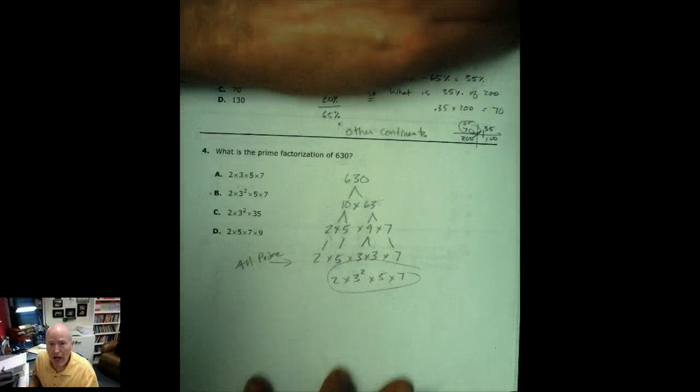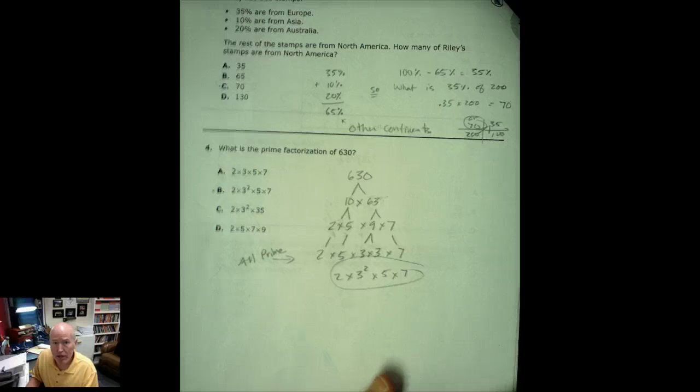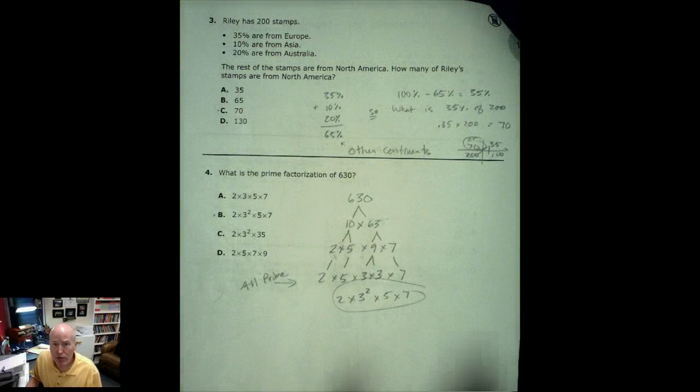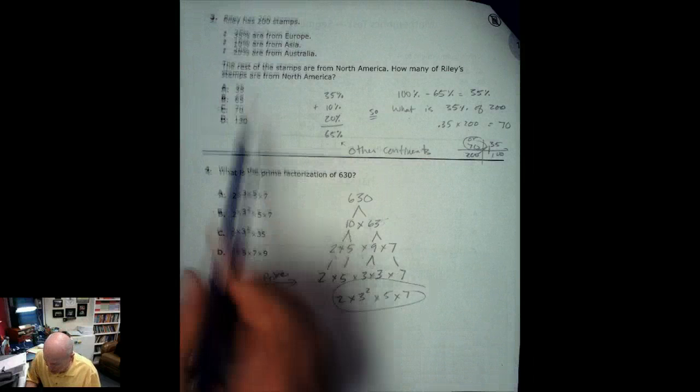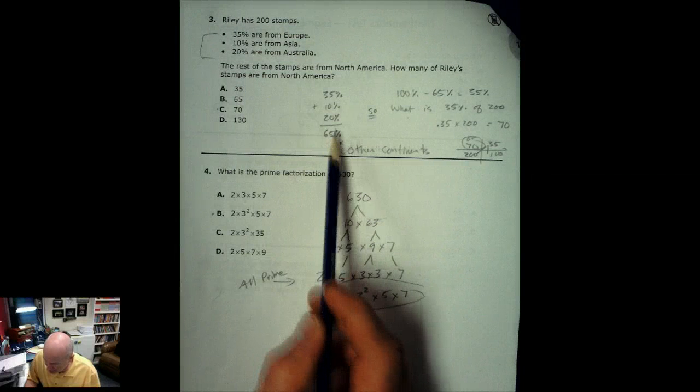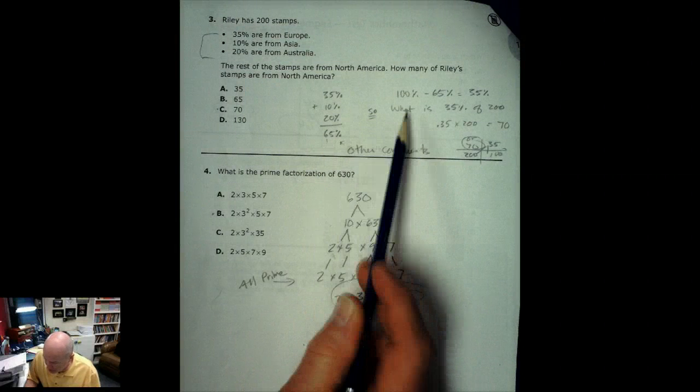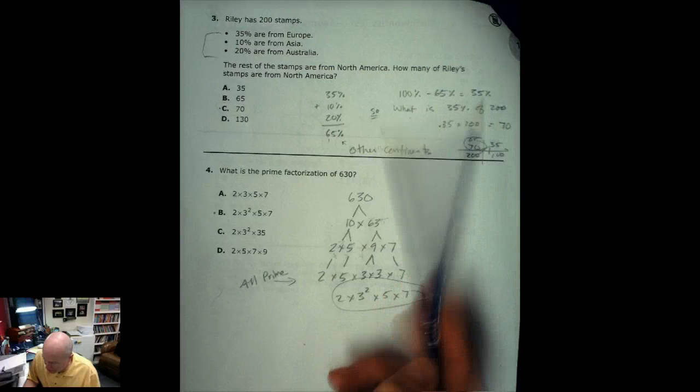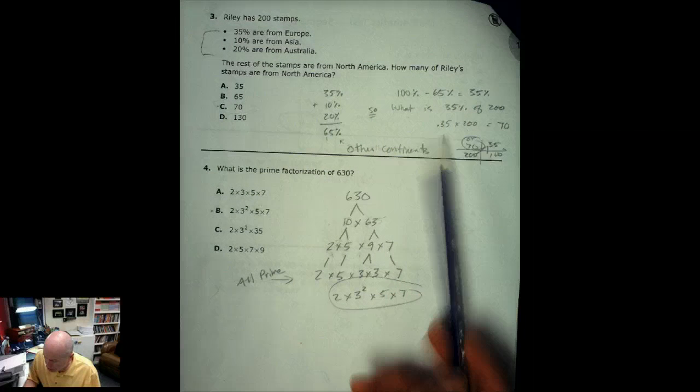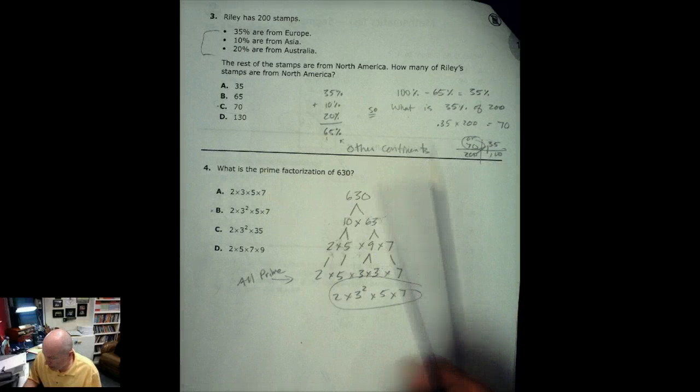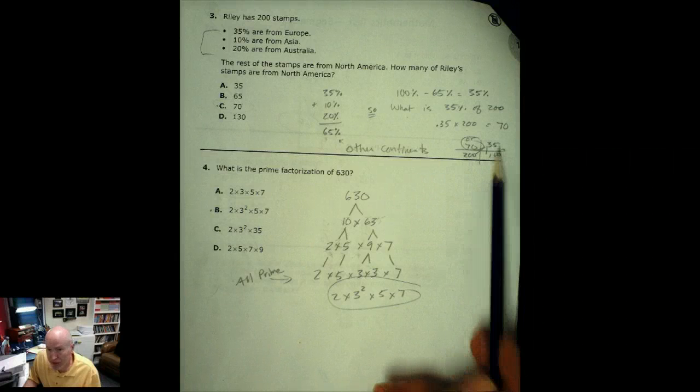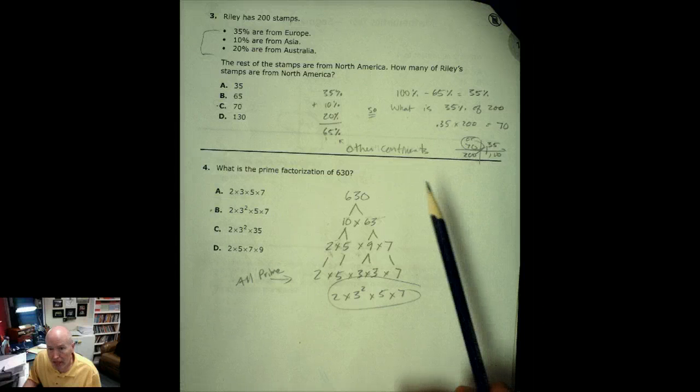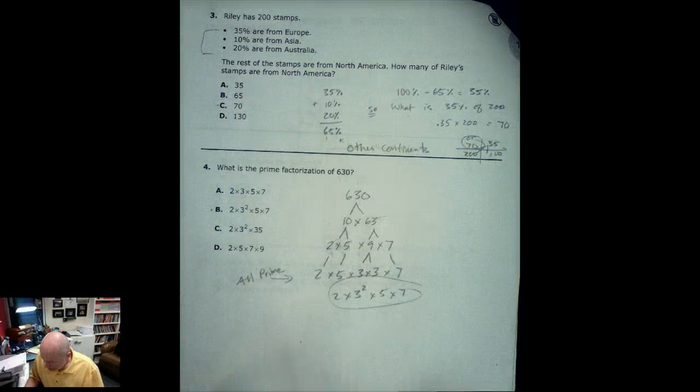Problem three, tricky question if you don't read the very top portion that Riley has 200 stamps. Basically what you're trying to find here is what's 35% of 200, because if you add these up you get 65%. 100 minus that is 35%. So what is 35% of 200? I used the box. I was looking for part of 200 which is equal to 35%. So multiply diagonally, divide the other two.